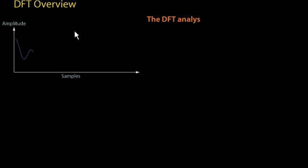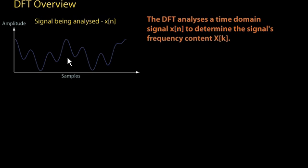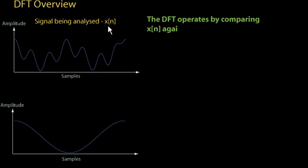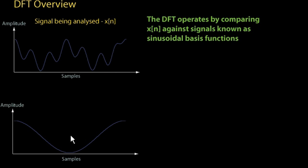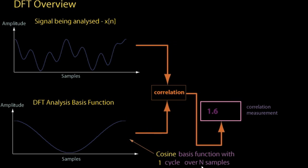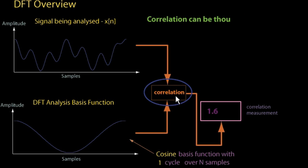The DFT is a mathematical process which analyzes a time domain signal in order to extract that signal's frequency content or frequency domain information. It basically operates by comparing or correlating the signal being analyzed against what are known as sinusoidal basis functions or sinusoidal basis waveforms. The comparison is achieved using a mathematical technique called correlation, which can be thought of as a measure of similarity between signals, or as a measure of how strongly present one signal is in another signal.